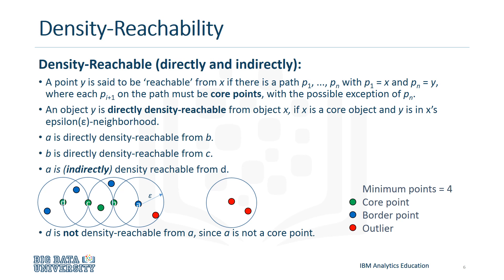A point Y is said to be reachable from X if there is a path P1 to PN, with P1 equals X and PN equals Y, where each Pi+1 on the path must be core points, with the possible exception of PN. An object Y is directly density reachable from object X if X is a core object and Y is in X's epsilon neighborhood.